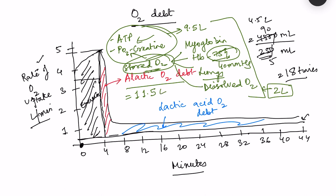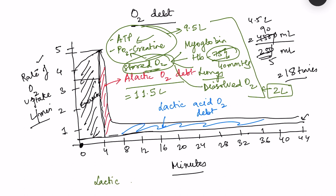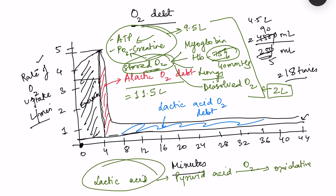The lactic acid oxygen debt refers to the extra oxygen required to convert lactic acid back to pyruvic acid, which then re-enters oxidative metabolism. This is why, even after exercise has stopped, oxygen uptake remains much higher than at rest — that elevated oxygen uptake represents the lactic acid oxygen debt component.